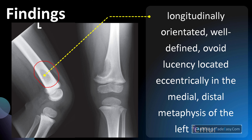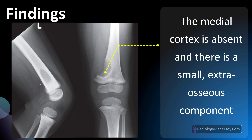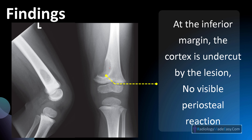Please be specific when you present or write your findings because it is very important for examination purposes — to impress your examiners. In this film you can see the medial cortex is absent, and when you carefully observe, a small extraosseous component can be seen. At the inferior margin, the cortex is undercut by the lesion.